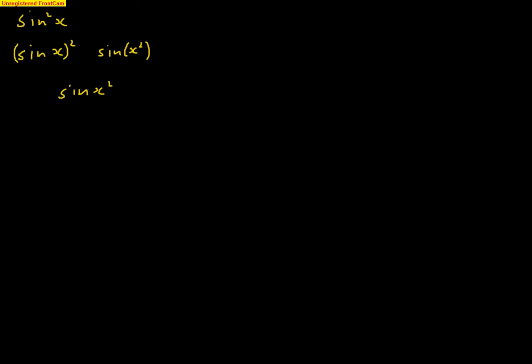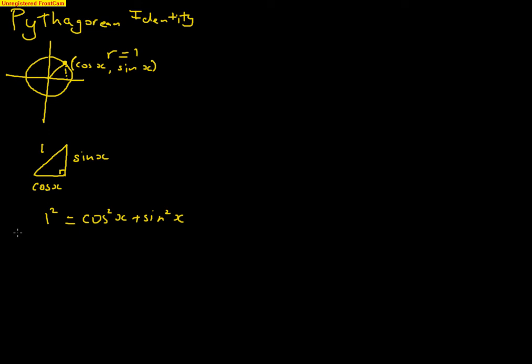Alright, now back to what we were saying before. We have our Pythagorean identity, which is that cos squared x plus sin squared x is equal to 1. So, this could apply to any angle. As long as they're the same for both sin and cos, then it's always going to be equal to 1.